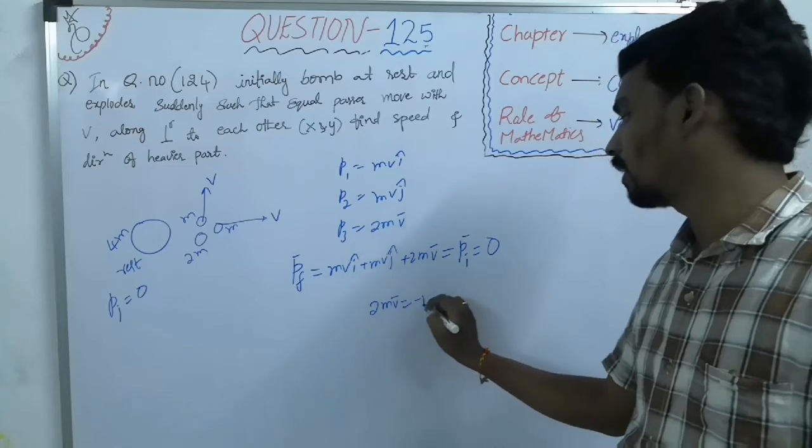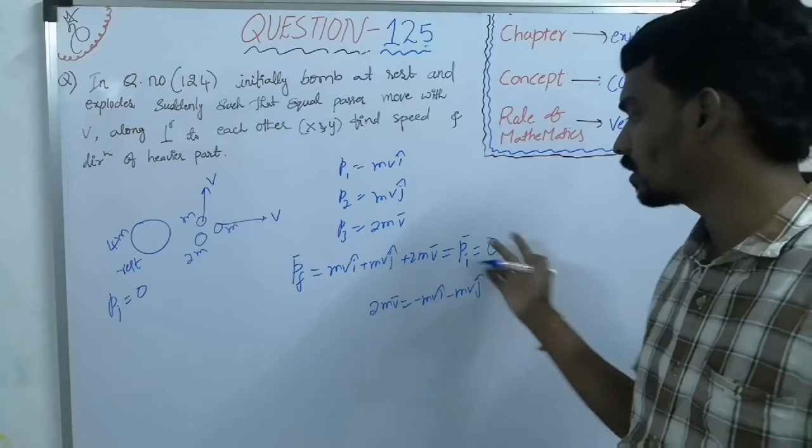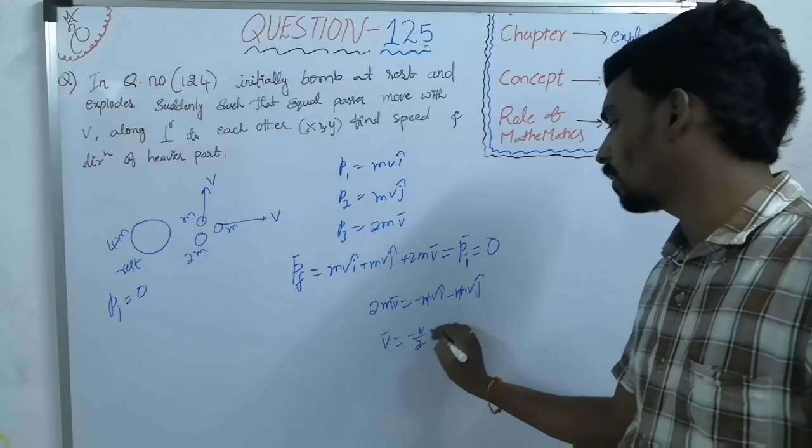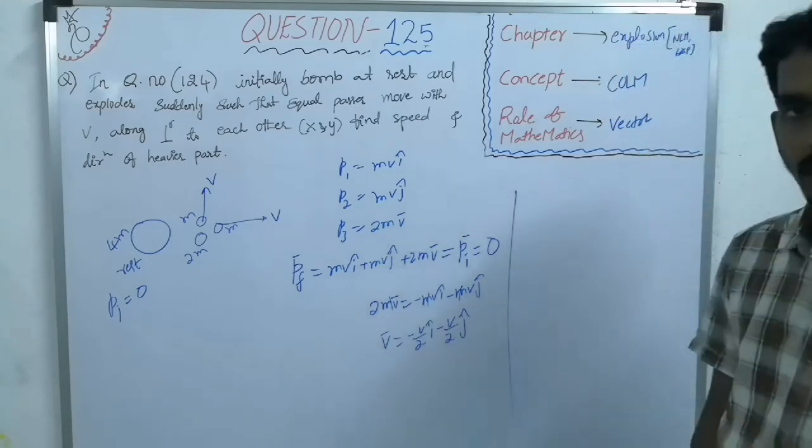Then, 2m v bar should be equal to minus mv i cap minus mv j cap, bring this, this side. m, m get cancelled. So v bar is minus v by 2 i cap minus v by 2 j cap.